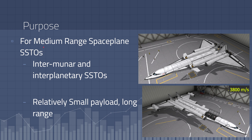So the purpose. This formula is for medium range space plane SSTOs. It's for intermooner, so you can fly to the Mun or Minimus, and interplanetary SSTOs, like flying to Duna. So this one is for flying to Duna, while this one is more for flying in the Kerbin system. It's for relatively small payloads going long ranges.